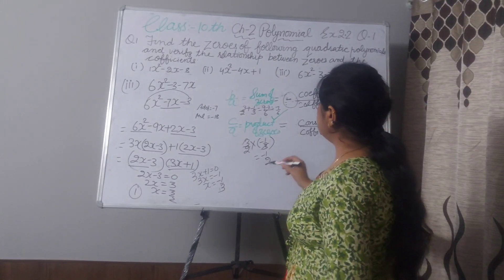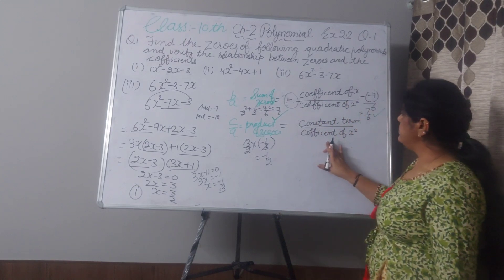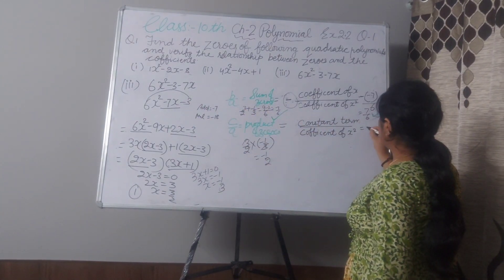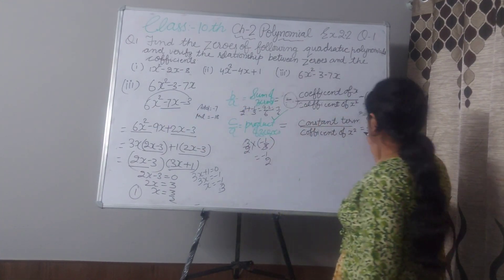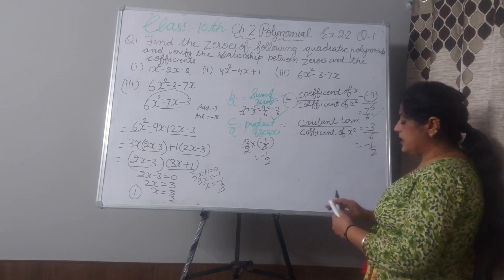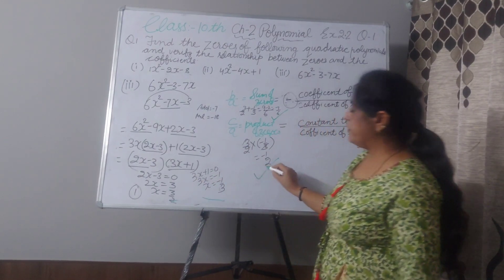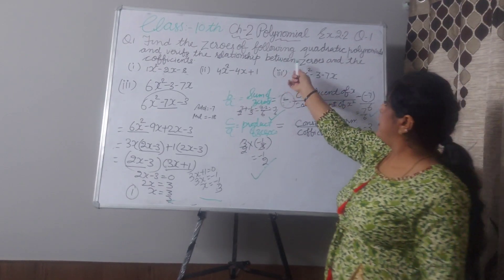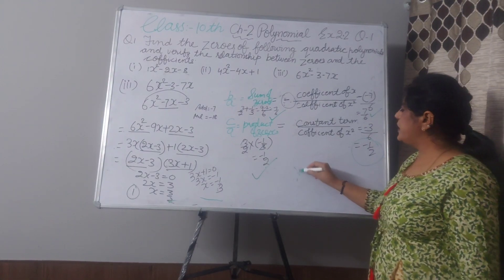Product of zeros: 3/2 multiplied by minus 1/3 — the 3s cancel — gives minus 1/2. According to the formula c by a: constant term is minus 3 and coefficient of x² is 6, so minus 3 divided by 6 equals minus 1/2. Product by solving is minus 1/2, and by the relationship formula between zeros and coefficients is also minus 1/2. Verified.